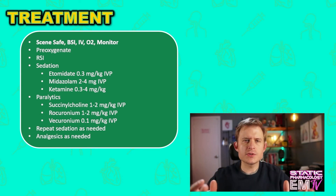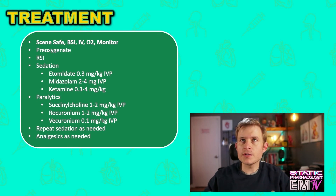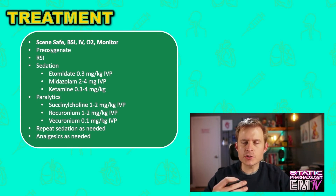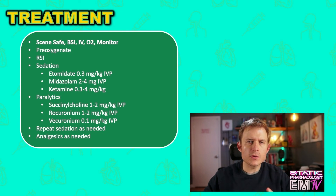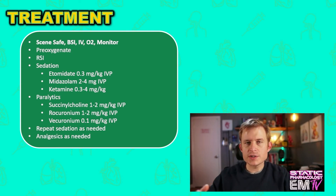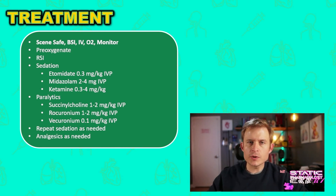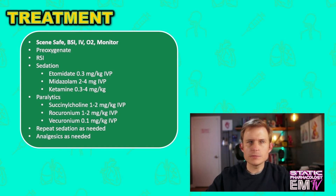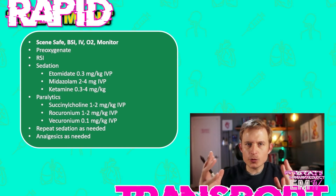Next, we'll administer another dose of a repeat sedative. After you've controlled the airway, you can go very high dose if you feel that's indicated. Providing analgesia to somebody who's been intubated will go a long way in helping you control their airway better — you get better ventilatory compliance when they're not feeling as much discomfort. And then finally, rapid transport. And that's it.